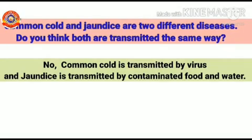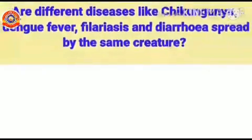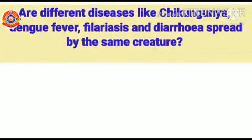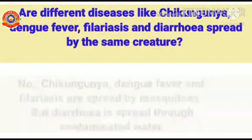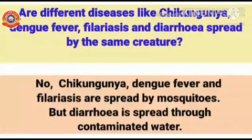Common cold and jaundice are two different diseases. Do you think both are transmitted the same way? No — common cold is transmitted by a virus, and jaundice is transmitted by contaminated food and water. Are diseases like chikungunya, dengue fever, filariosis, and diarrhea spread by the same creature? No — chikungunya, dengue fever, and filariosis are spread by mosquitoes, but diarrhea is spread through contaminated water.